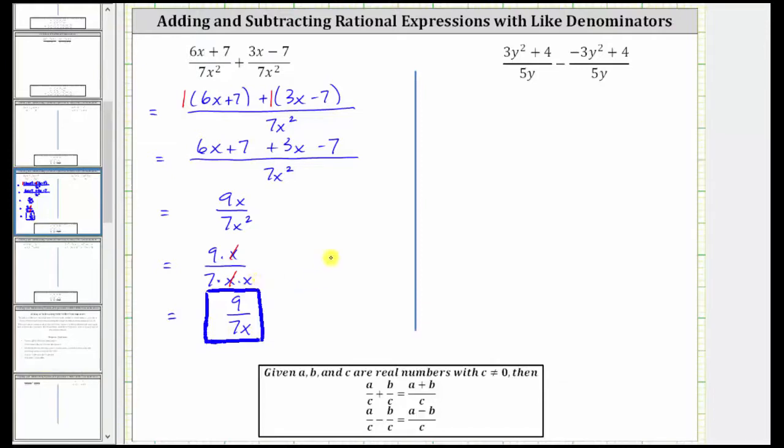Let's look at the second example, where again we already have a common denominator of 5y. When we find the difference, the denominator remains 5y, and we subtract the numerators, which gives us the quantity 3y squared plus 4, minus the quantity negative 3y squared plus 4. And now we clear the parentheses and combine like terms. If it's helpful, we can think of distributing a positive one here, and because of the subtraction, we can think of distributing a negative one here.